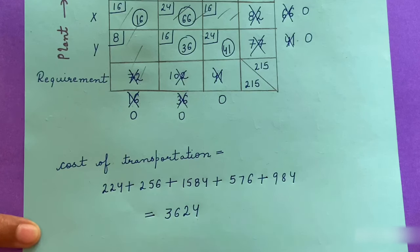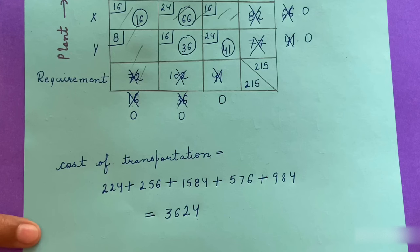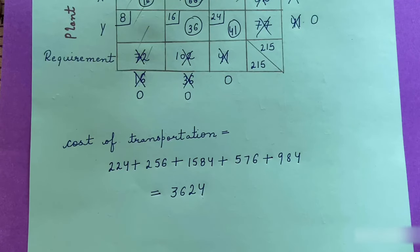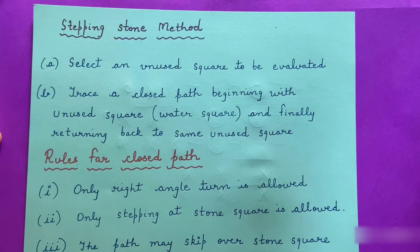For checking optimality we have two methods: the stepping stone method and the modified distribution (MODI) method. In this video we will discuss only the stepping stone method; MODI method will be covered in the next video. Let's understand the basic steps and rules of applying the stepping stone method to find the optimal solution.